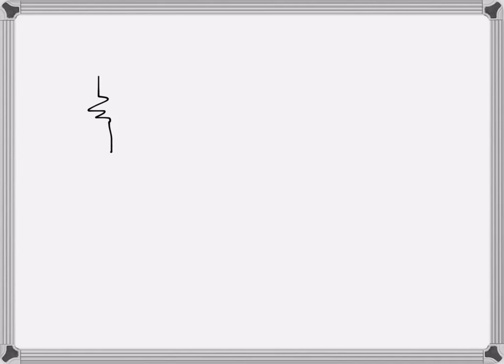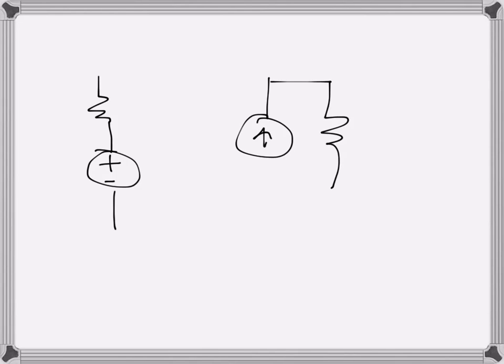I will talk about a circuit solving technique known as source conversion technique, where a voltage source connected with a series resistance can be converted into a current source with a parallel resistance, and vice versa — a current source with parallel resistance can be converted into a voltage source with a series resistance.